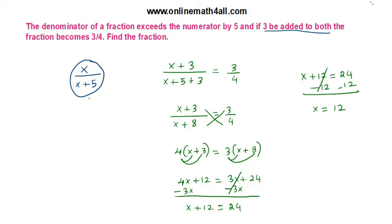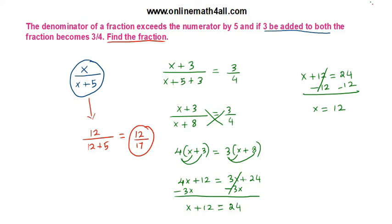I got the value of x. Now I can find the fraction easily: x is 12, and x plus 5 means 12 + 5 = 17. So the fraction is 12 over 17. We got the answer — the fraction is 12/17.